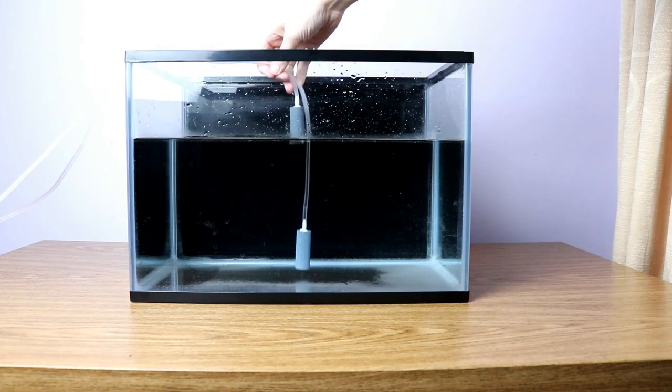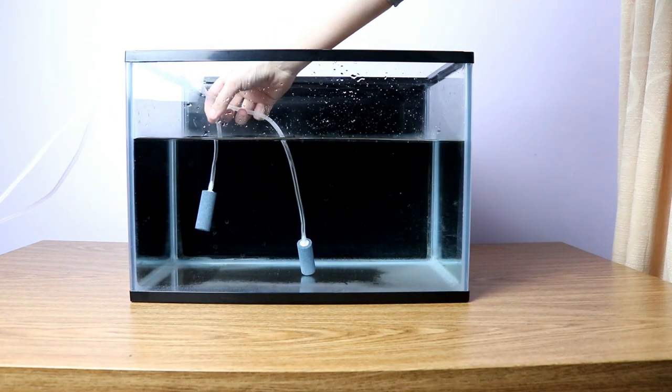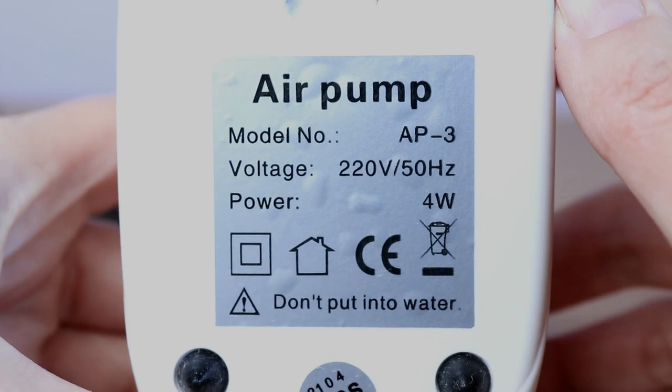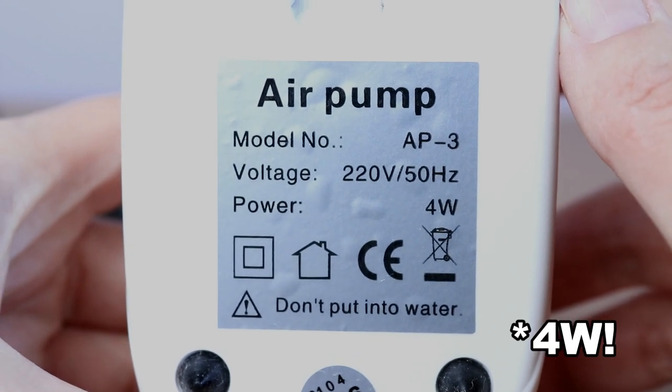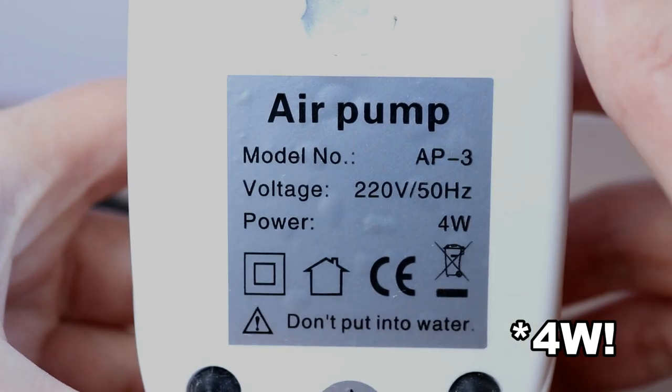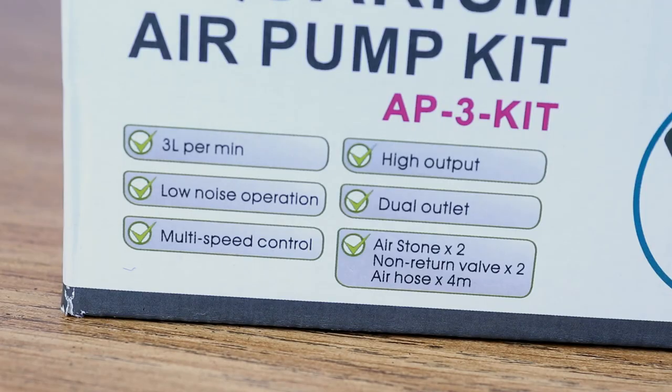Now my little test tank is only about 25 liters and that's just so that we can see clearly what's going on. The pump itself actually runs on 3 watts so it's only really small and it's nice and cheap to run, but it still delivers 3 liters of air per minute, which is perfectly adequate for a medium sized tank of say about 200 liters.